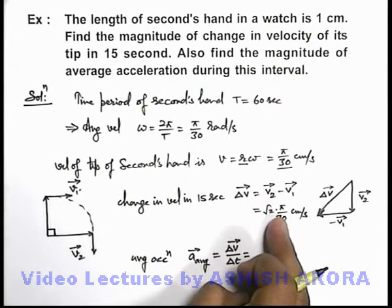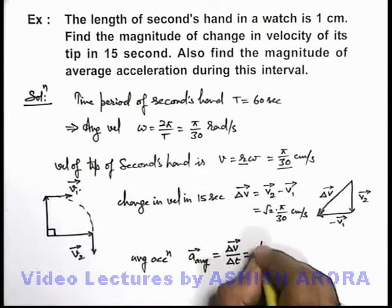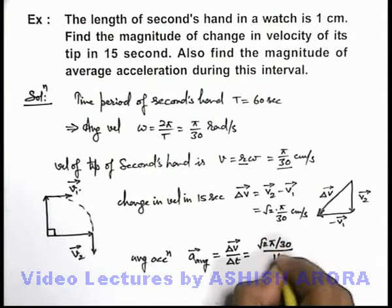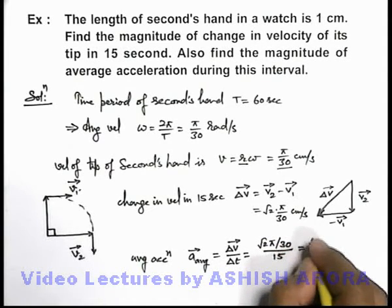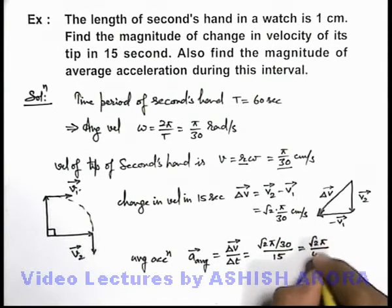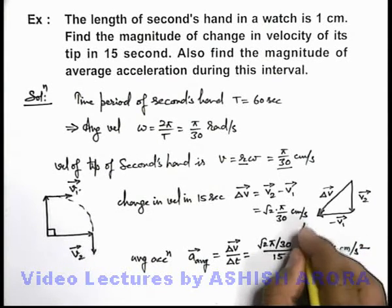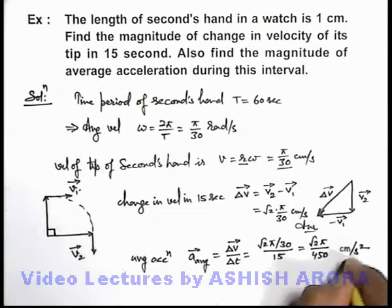So change in velocity can be given by this, and time is 15 seconds, so we can simply write as root 2 π by 30 divided by 15. The result we will get is root 2 π by 450 centimeters per second square. So these are the answers to this problem.